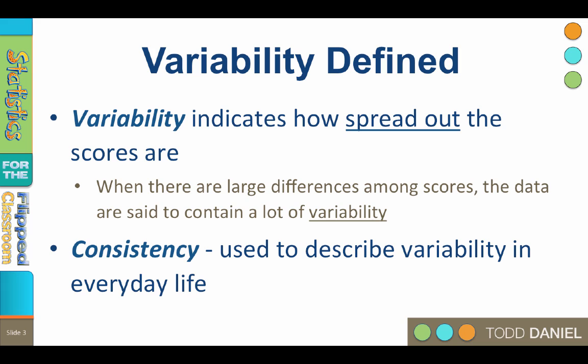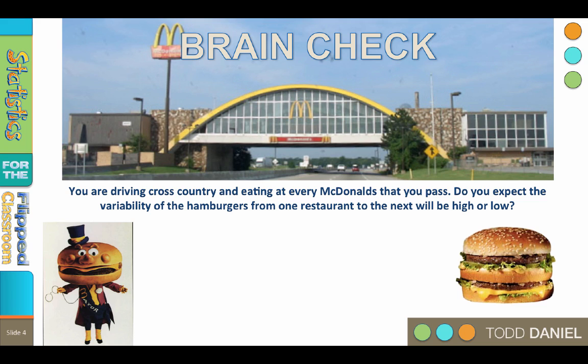If people, events, and experiences are very similar, we call them consistent. And as human beings, we like consistency because we like to know what to expect. Consistency minimizes uncertainty. So imagine that you are driving cross-country and you decide to stop and eat a hamburger at every McDonald's that you pass. Do you expect the variability of the hamburgers from one restaurant to the next to be high or low?